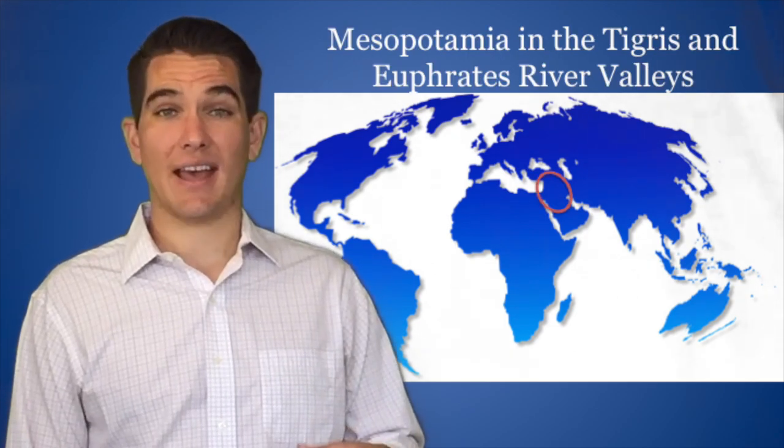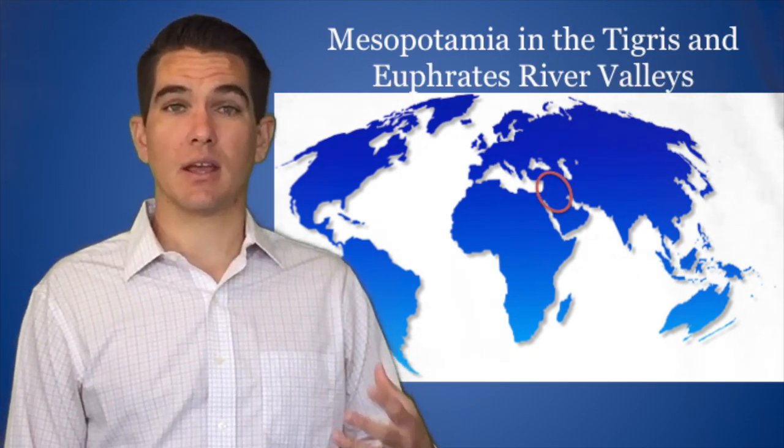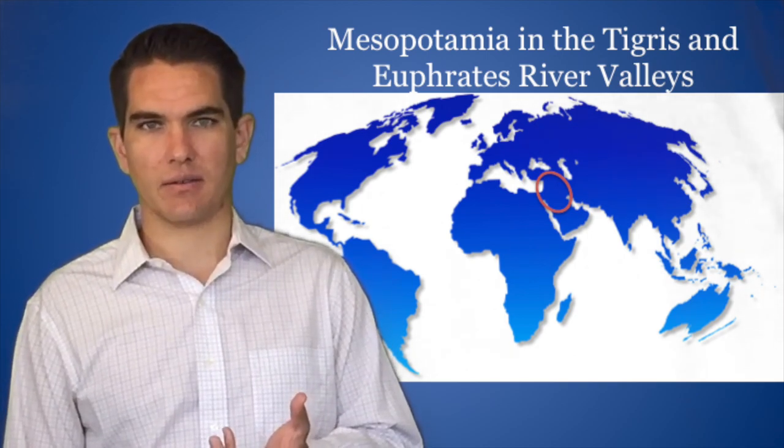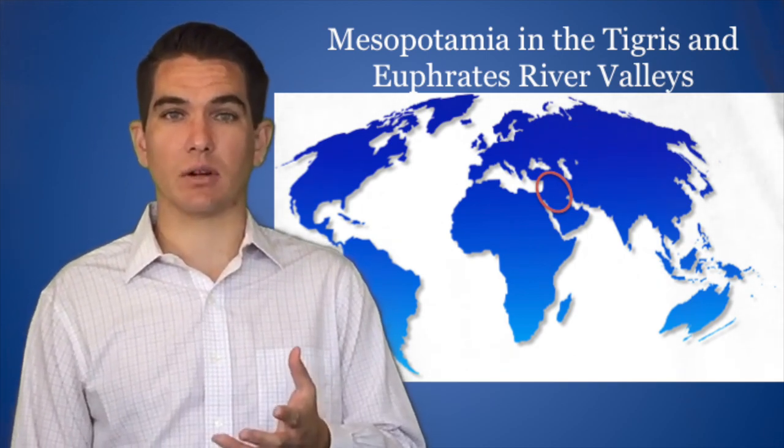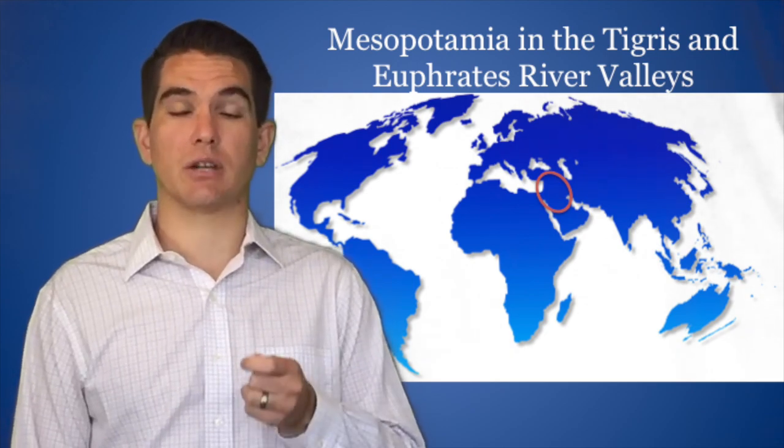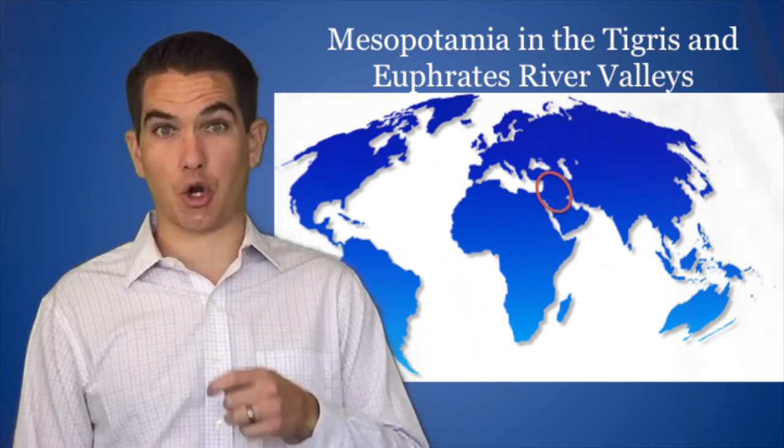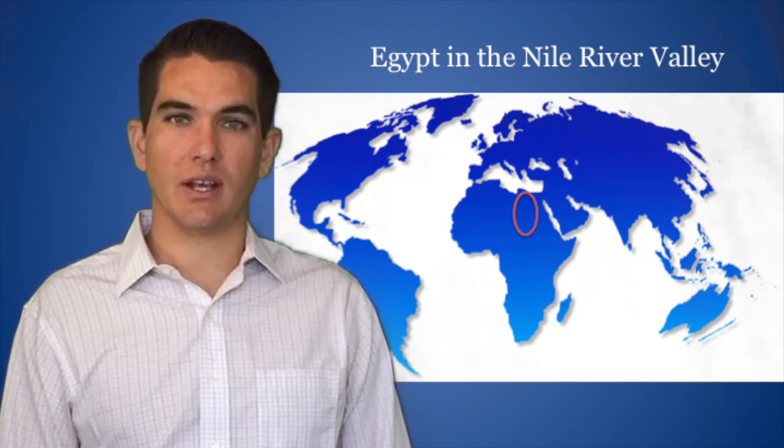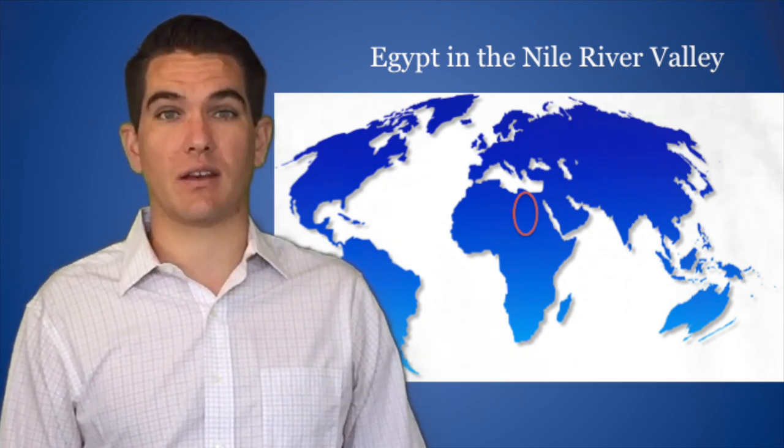In the same area as the agricultural revolution began, so does civilization itself begin about 5,000 years later. In Mesopotamia, along the Tigris and Euphrates River, the first real civilization emerges. This is called the cradle of civilization. The second early river valley civilization is Egypt, which is, of course, along the Nile River.